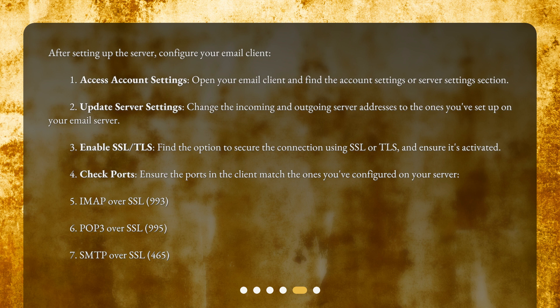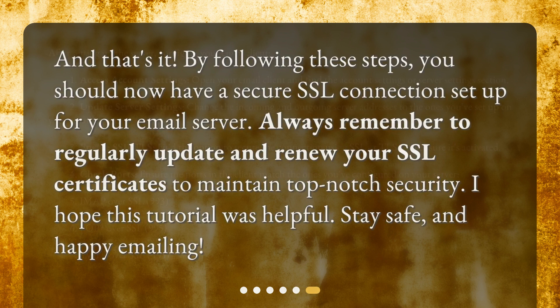Check ports to ensure the ports in the client match the ones you've configured on your server: IMAP over SSL — 993, POP3 over SSL — 995, and SMTP over SSL — 465. By following these steps, you should now have a secure SSL connection set up for your email server. Always remember to regularly update and renew your SSL certificates to maintain top-notch security.